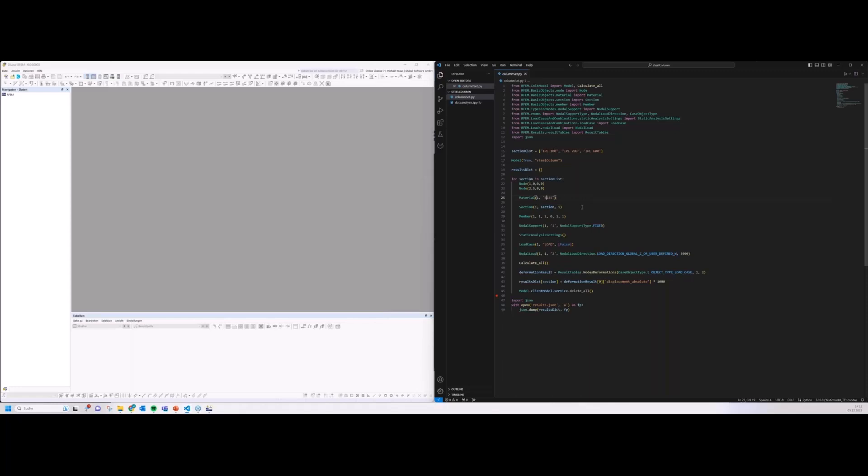We want to assign a material, a simple steel S235, assigned via this text and a material number. Then we define a section. We give it the number one, and for the name of that section, we define it per this list. Having the nodes and the material in the section, now we can define a member, and finally, we need to give a nodal support. We just clamp it at the first node. Then we can jump into the load case definition. We define a load case, exclude self-weight, and put a nodal force onto the second node in direction of global Z with three kilonewtons.